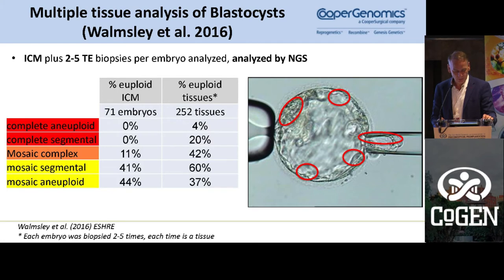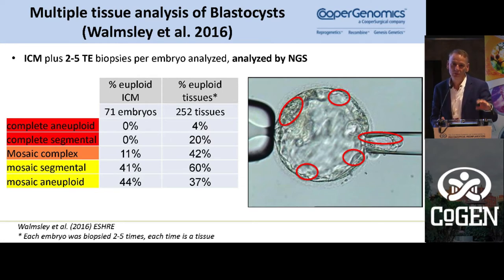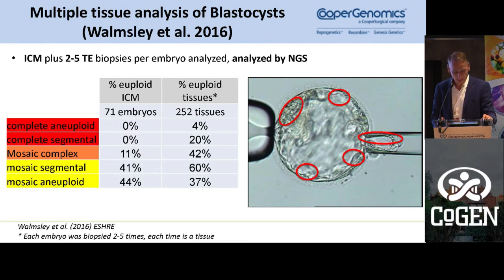What we found is that if you have a completely aneuploid trophectoderm biopsy, there is zero percent chance the inner cell mass is normal. The same is true for complex abnormalities where all cells are abnormal. When you have complex mosaics with three or more chromosomes involved, very few inner cell masses were normal. But when mosaics involve one chromosome, on average about 40% of inner cell masses were normal — so about 40% of mosaic embryos could still produce a normal baby, provided they are not complex mosaics.